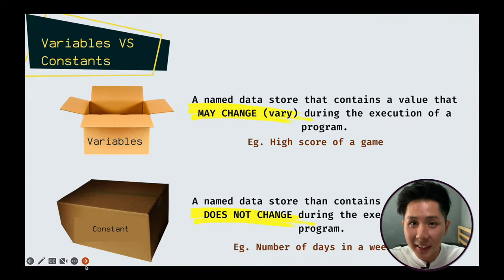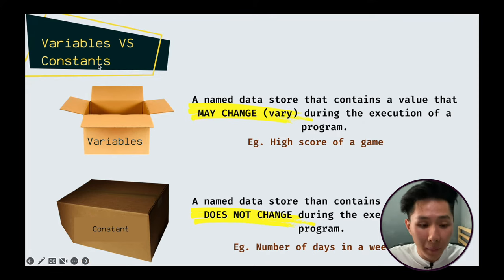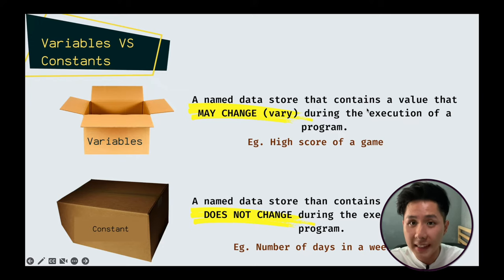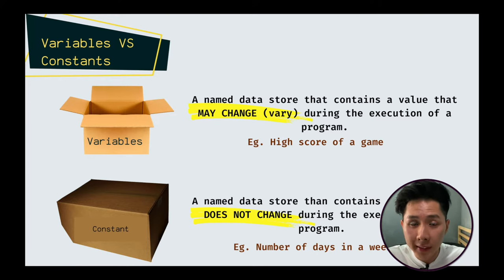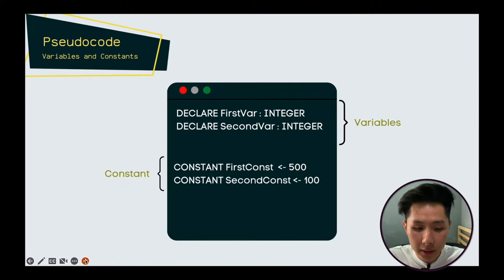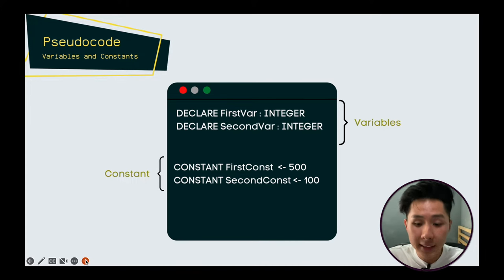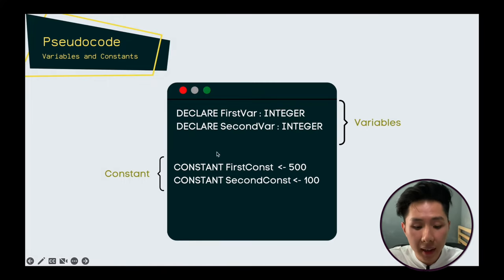There are two types of named data stores. First is a variable, which is a named data store that contains a value that may change during execution of the program. A constant is the opposite — once you assign a value to a constant, you wouldn't want to change it. In pseudocode, for a variable you write the DECLARE keyword followed by the name and data type; for a constant, you write the CONSTANT keyword, the name, and the value.